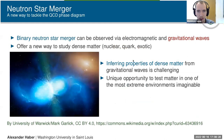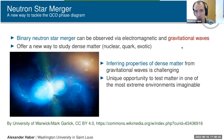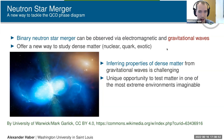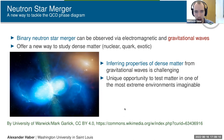Neutron star mergers are interesting not just because they probe a different part of the phase diagram, but because we can observe them in a different way — not only electromagnetic radiation, but gravitational waves. This offers a new way to study dense matter, whether nuclear matter, quark matter, or more exotic kinds like hyperons. Inferring the properties of dense matter from gravitational waves is quite challenging, but it's a unique opportunity to test matter in the most extreme environments we can imagine.